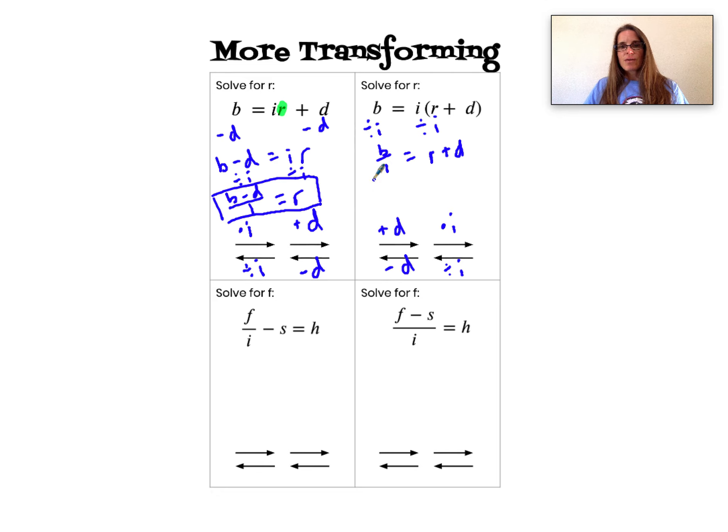Last inverse operation is to subtract d from both sides of my equation. B divided by i minus d is my solution, it equals r.